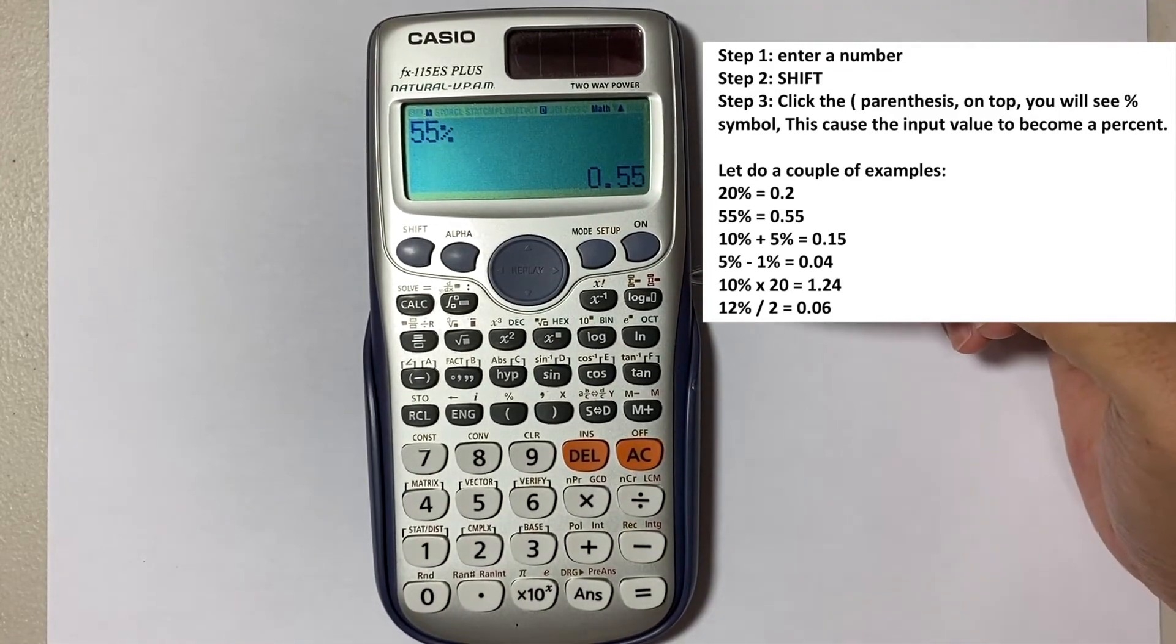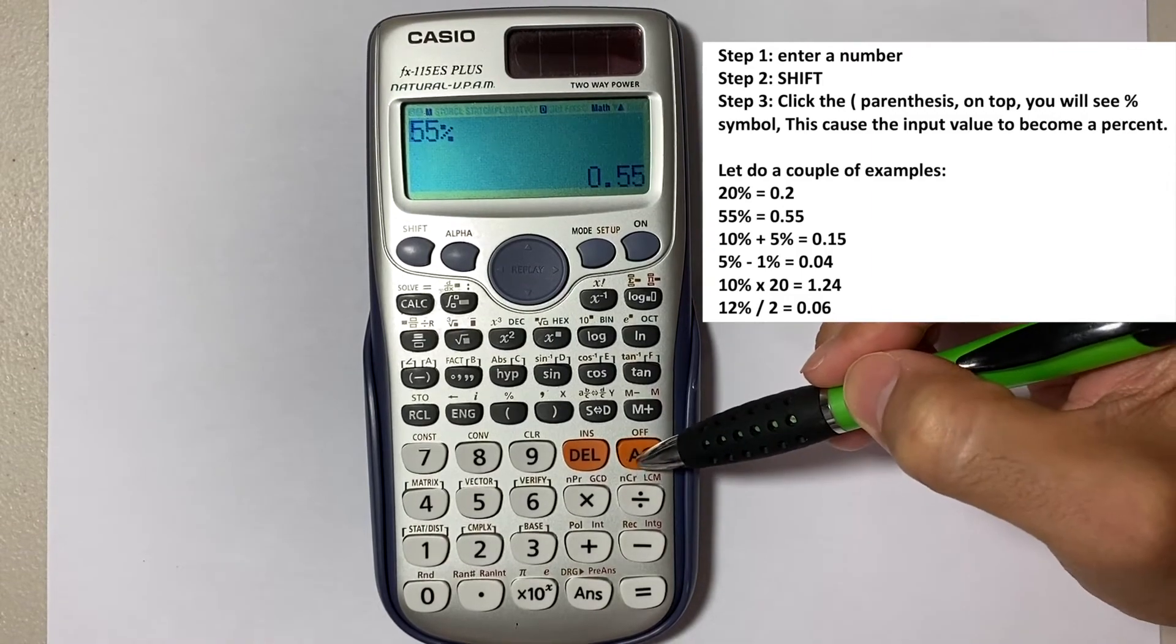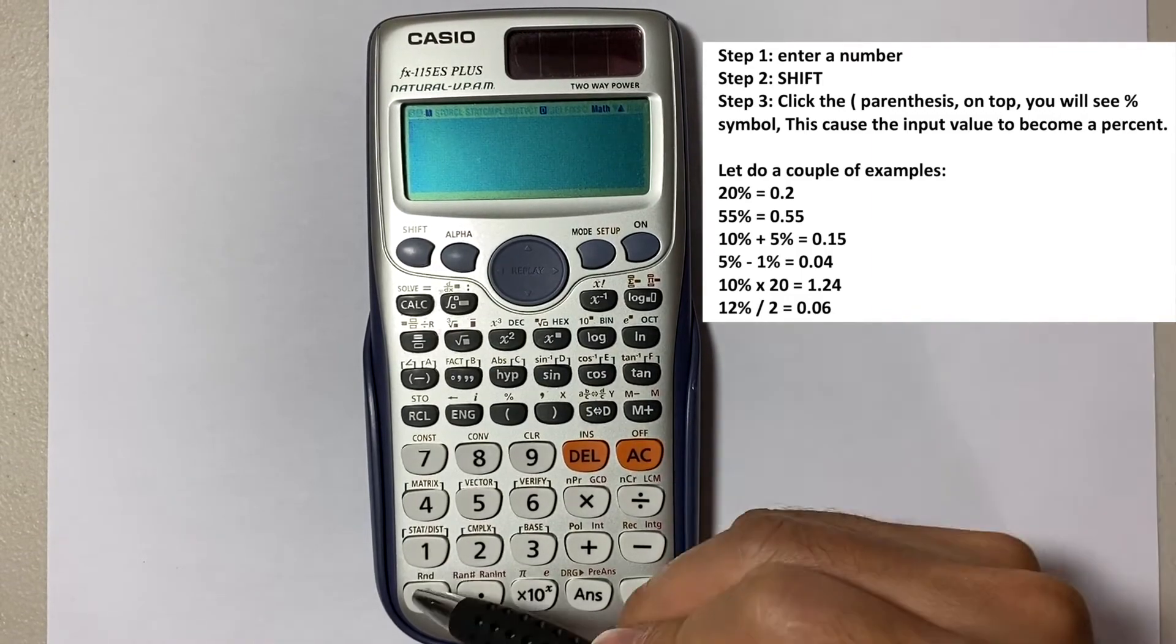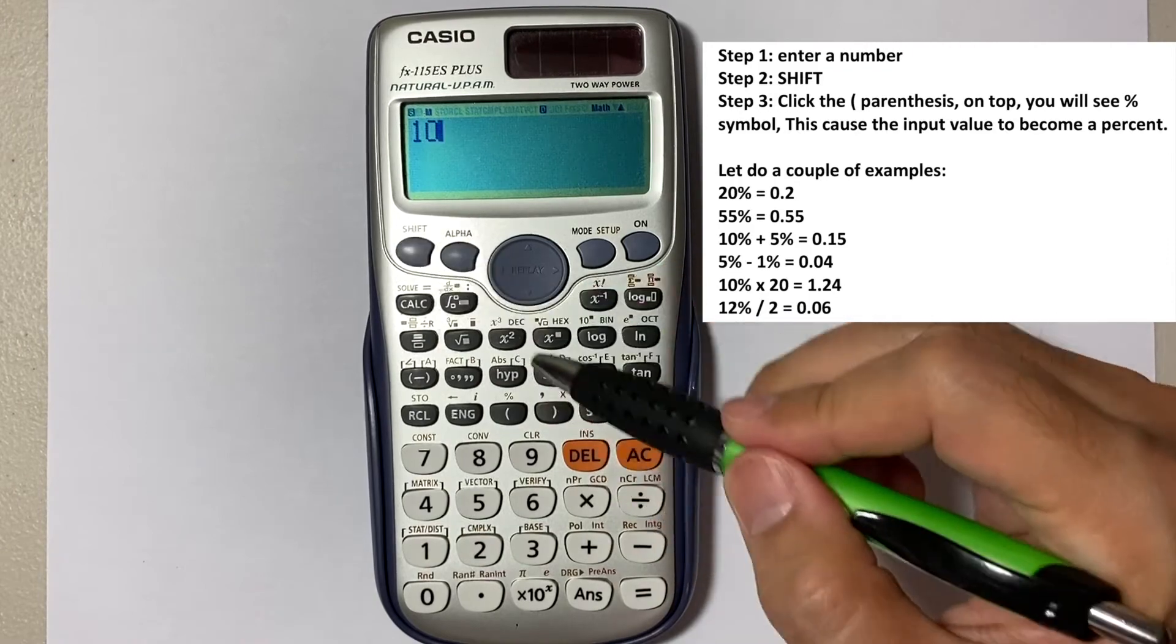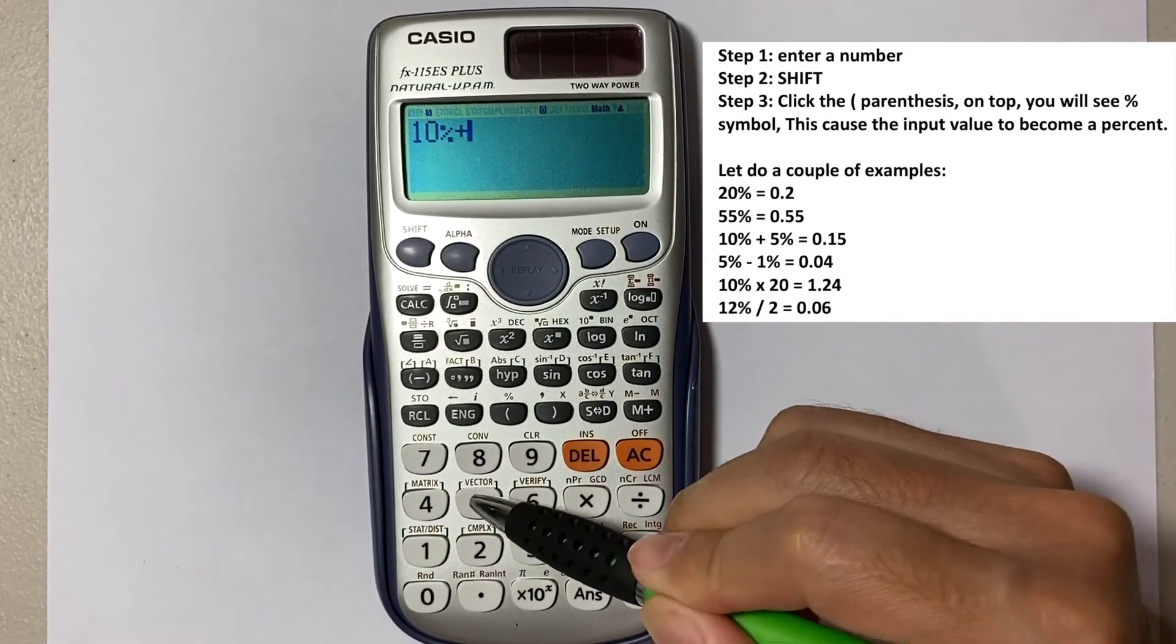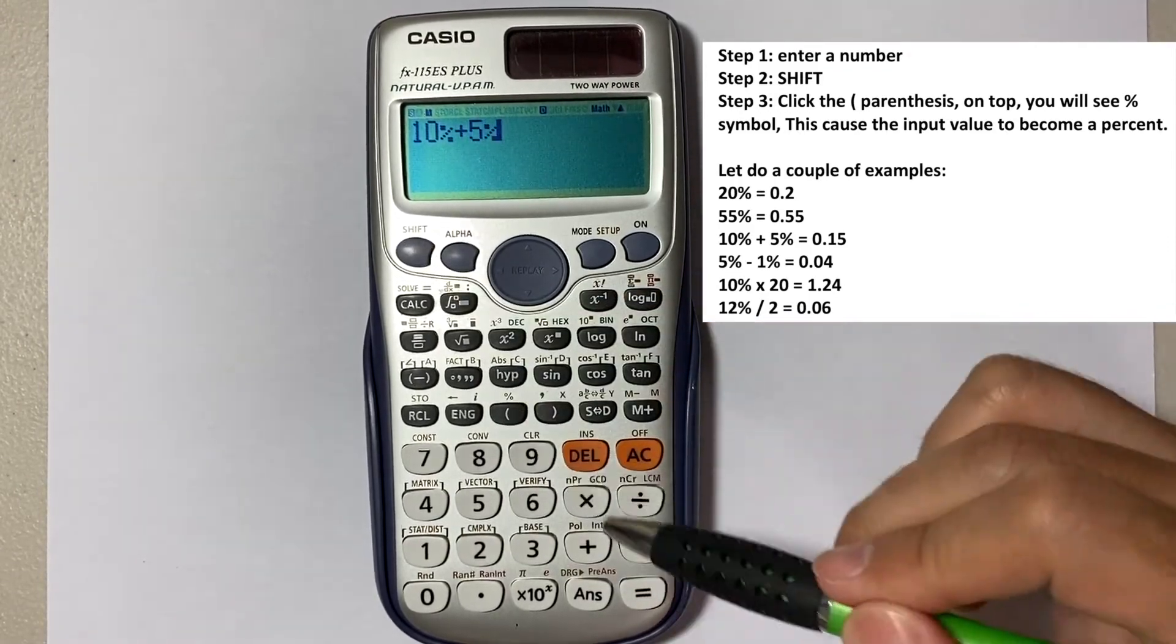How about doing some addition right here? Let's say 10 percent plus 5 percent. That will give you 0.15.